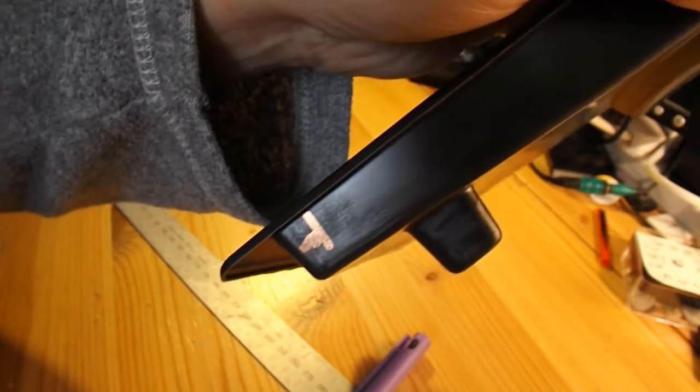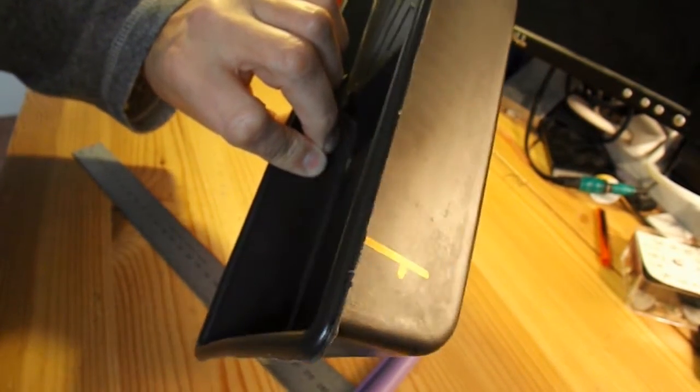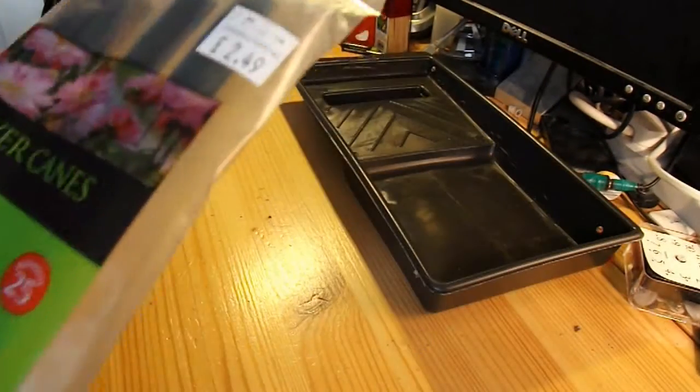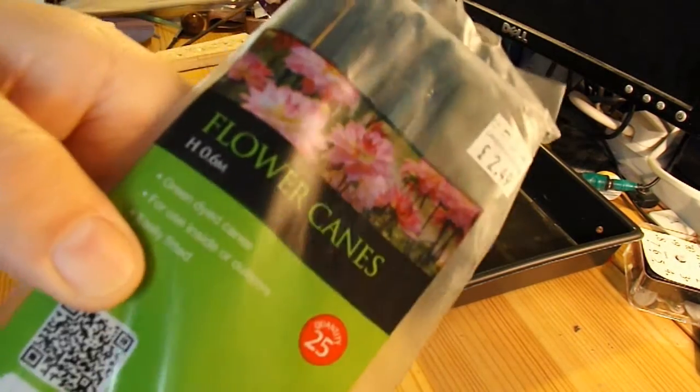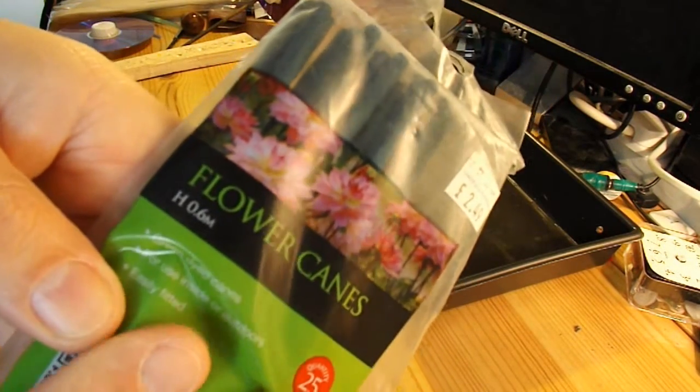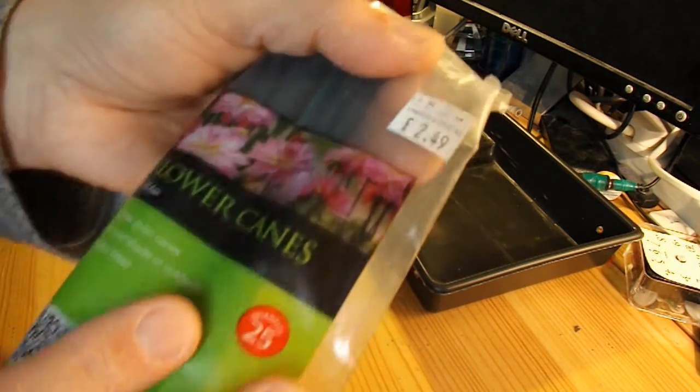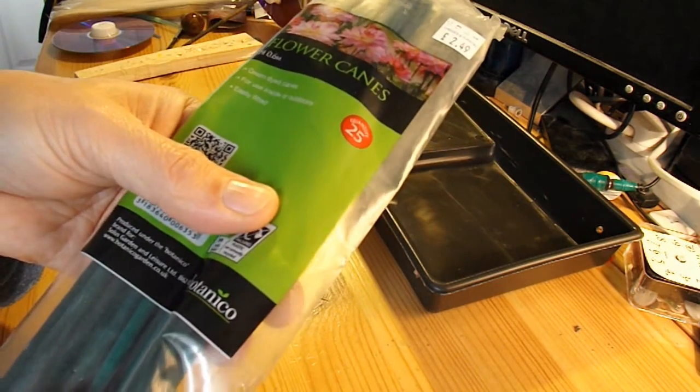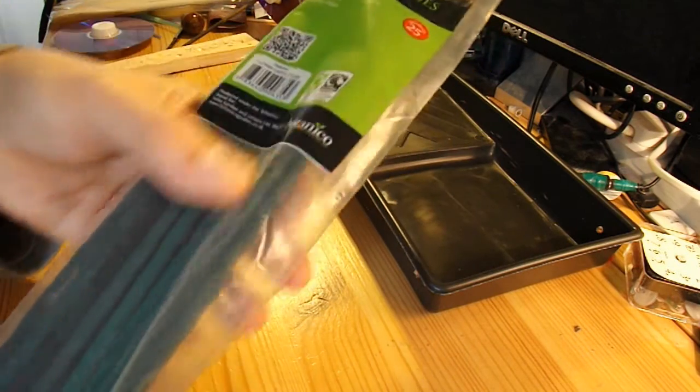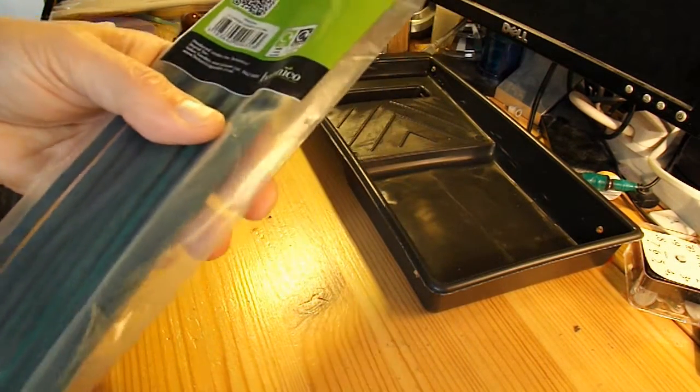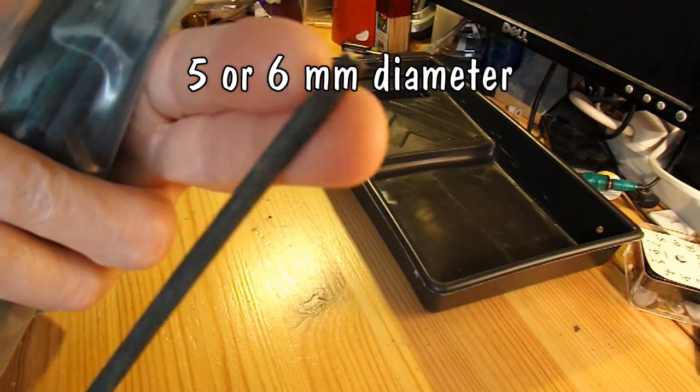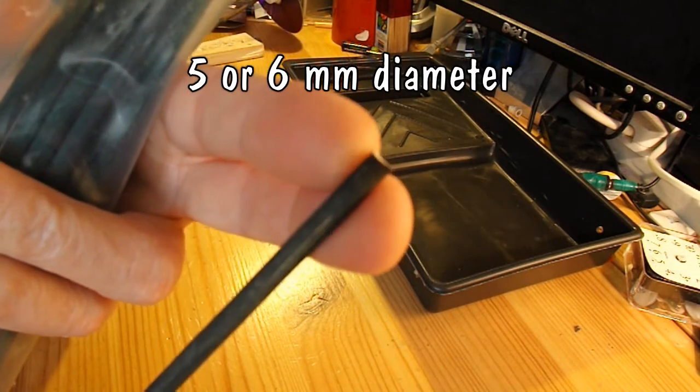OK, I've marked up where I'm going to drill my holes. I'm going to replace the existing axles with these flower canes that I bought in a garden centre. It's 25 for £2.49. So they're, what's that, 10 pence each.